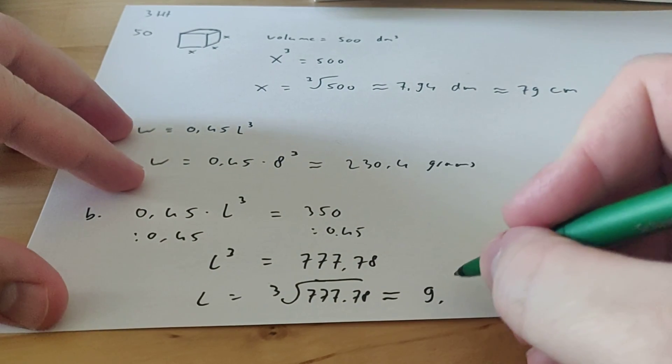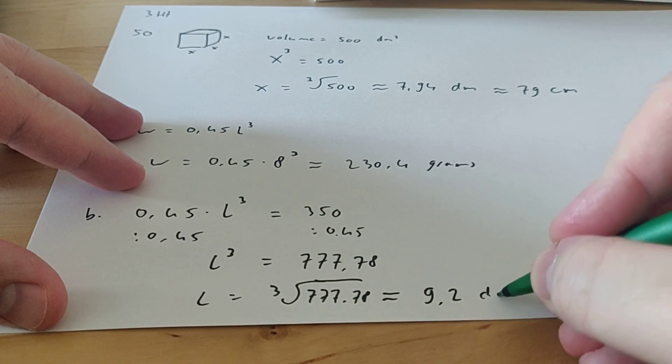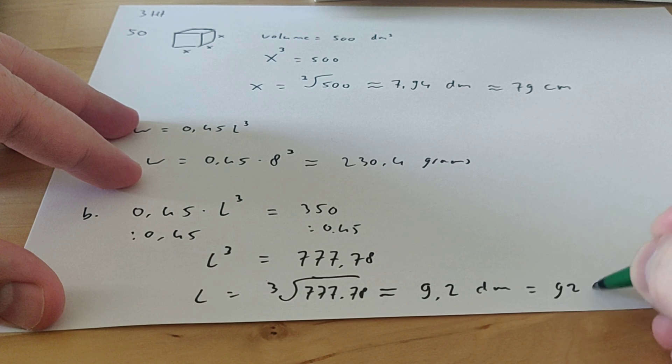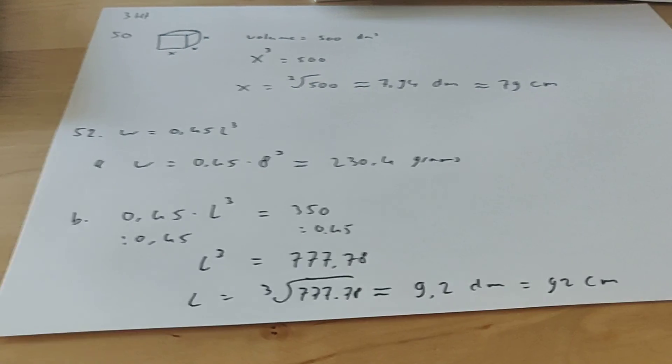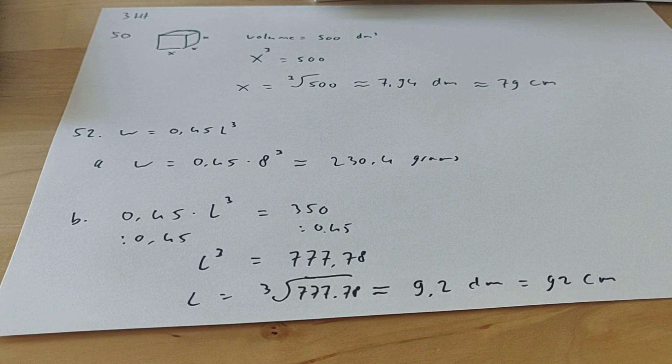So you get 9.2 decimeters. So that's 92 centimeters. So this is how to do exercise 52. Thank you for watching.